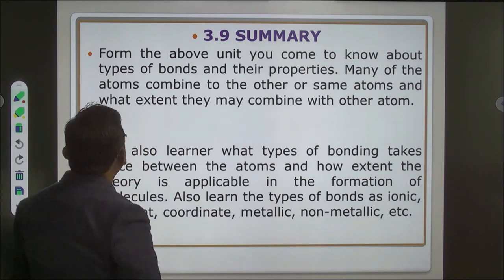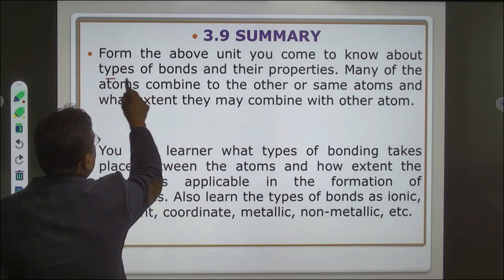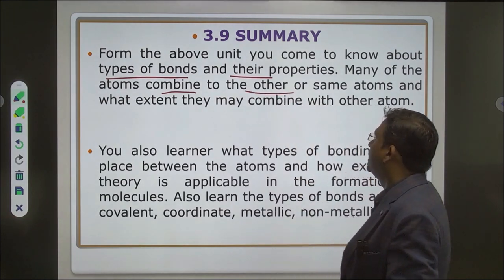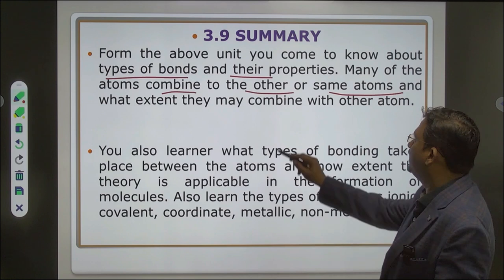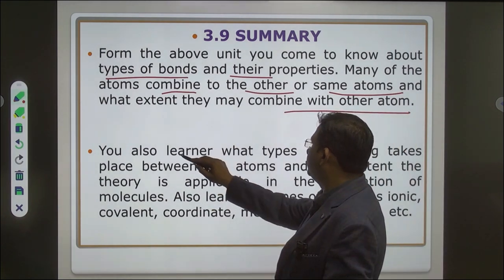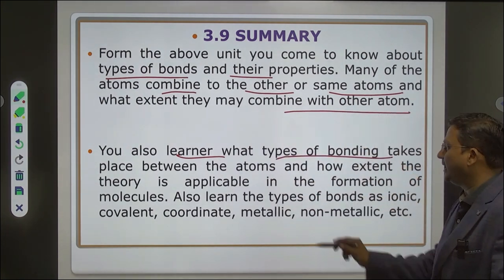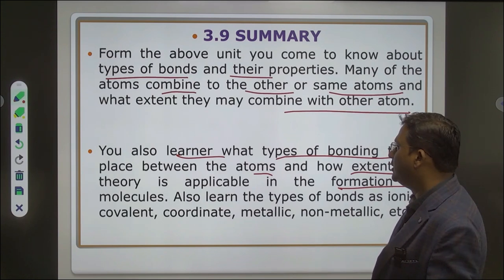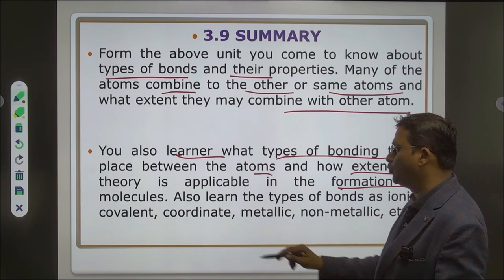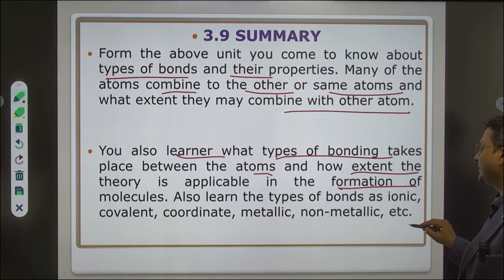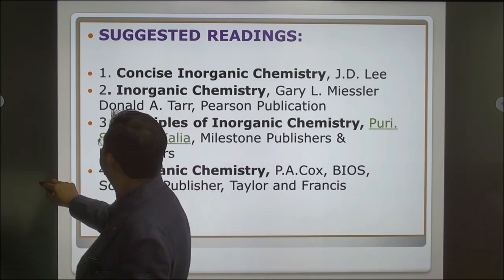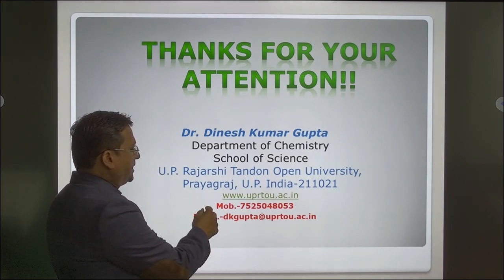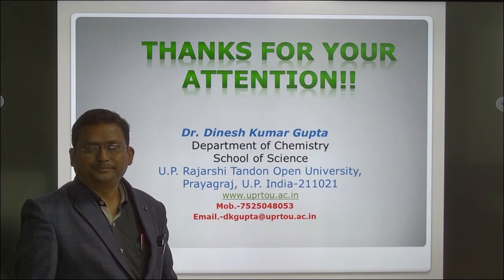This is the summary of the module. From this unit you have learned about types of bonds and atoms, their properties, how atoms combine with the same or other atoms, and the extent to which they may combine. You also learned about the types of bonding between atoms — ionic, covalent, co-ordinate, metallic, and non-metallic bonding — and how theory applies to the formation of molecules. These are the suggested books. If you have any questions, you can email us at the mail ID shown, or contact us at the number provided. Thank you for your kind attention.